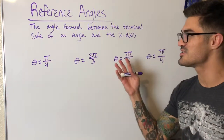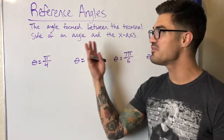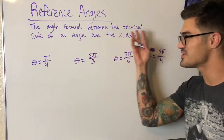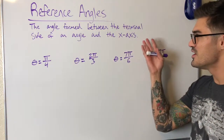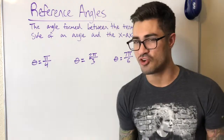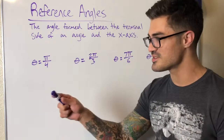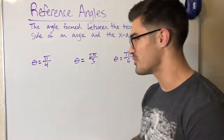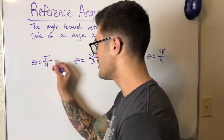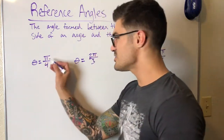A reference angle is the angle formed between the terminal side of an angle and the x-axis. There may be other definitions, but I always remind myself: draw toward the x-axis from the angle — that's how I remember reference angles.